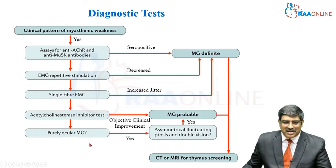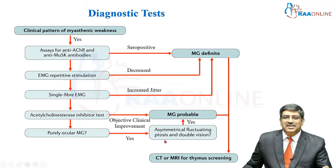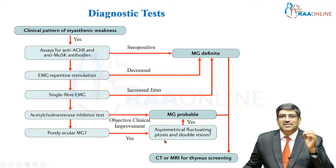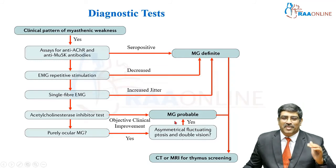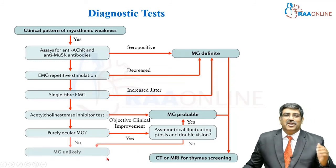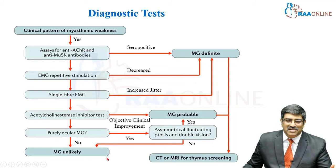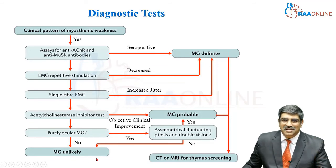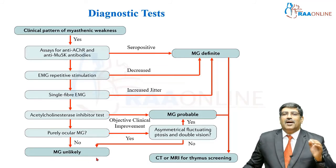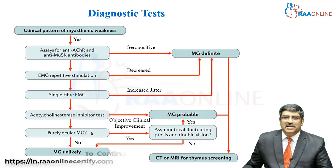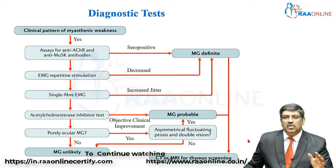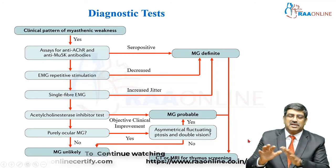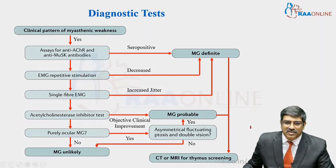If ocular myasthenia gravis is present and the patient has ptosis or diplopia, then probably it is myasthenia gravis. If there is no ocular myasthenia, then myasthenia gravis is unlikely. But whenever there is doubt of myasthenia gravis, always do a CT scan or MRI for thymic screening. This is how you perform diagnostic testing for myasthenia gravis.